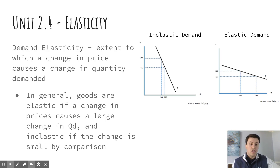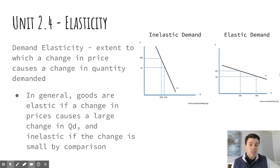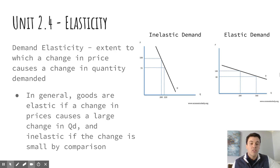Graphically, you're going to look at these two graphs here on the right. The one on the left represents a good with inelastic demand. You notice that it's more steep — it's still downward sloping. The law of demand still holds true here, but you see that with a price change of $100 to $70, a decrease in price, we have a relatively small increase in quantity demanded as a result. This would be an inelastic good.